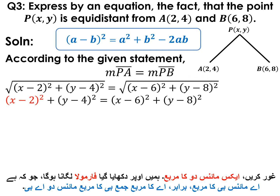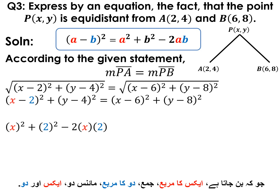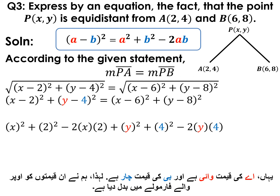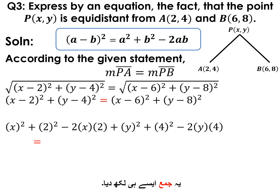We apply the formula (a − b)² = a² + b² − 2ab. For (x − 2)², a = x and b = 2, giving x² + 4 − 4x. Similarly, for (y − 4)², a = y and b = 4, giving y² + 16 − 8y. These are equal to the right-hand side expression.